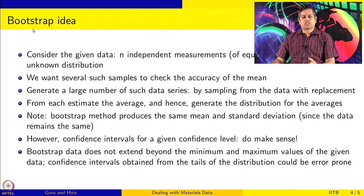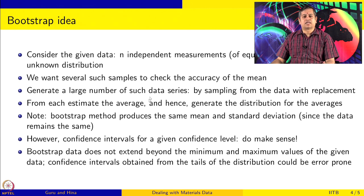The reason we use the bootstrap method is to get confidence intervals for the given value, like what is the probability that the mean will lie in a certain range. One also has to be careful because we are using the same dataset, so the minimum value and maximum value are fixed. All the datasets we generate by random sampling will also have the same minimum and maximum values, which means any contribution from the tail will be missing.